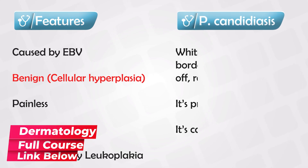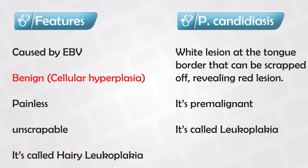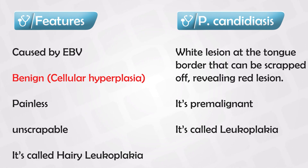Compared to pseudomembranous candidiasis, which also presents as a white plaque on the tongue, except that this lesion can be scraped off, and it reveals an erythematous area underneath. Pseudomembranous candidiasis is premalignant, and it is known as leukoplakia.